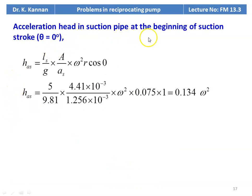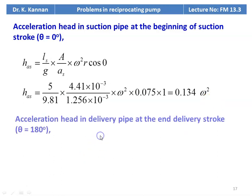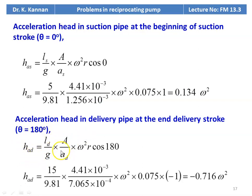Acceleration head in suction pipe at beginning of suction stroke (θ = 0°): H_AS = (LS/g) × (A/AS) × ω²R × cos 0° = 5/9.81 × (4.41×10⁻³ / 1.256×10⁻³) × ω² × 0.075 × 1 = 0.134ω². Acceleration head in delivery pipe at end of delivery stroke (θ = 180°): H_AD = (LD/g) × (A/AD) × ω²R × cos 180° = 15/9.81 × (4.41×10⁻³ / 7.065×10⁻⁴) × ω² × 0.075 × (−1), giving H_AD = −0.716ω².